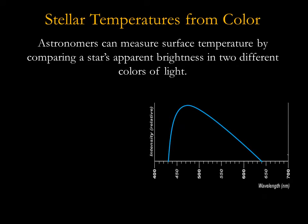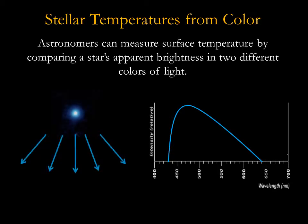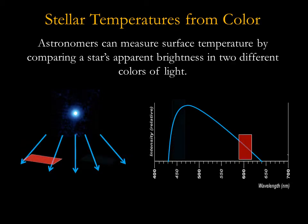Astronomers can measure surface temperature by comparing a star's apparent brightness in two different colors of light. For example, consider the hot star Vega. If we compare the amount of light through a red filter with the amount of light through a blue filter, there will be more light in the blue because the star is hot, and hotter objects emit more light at shorter wavelengths.